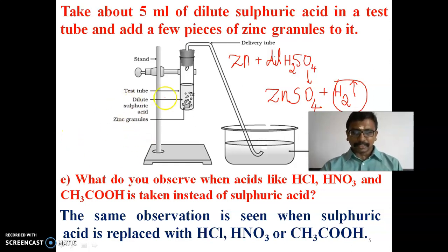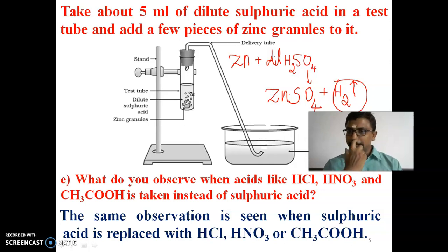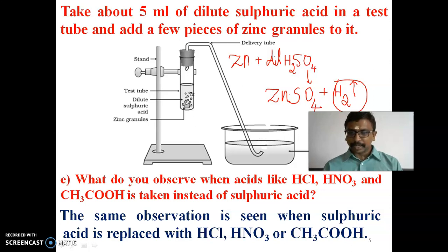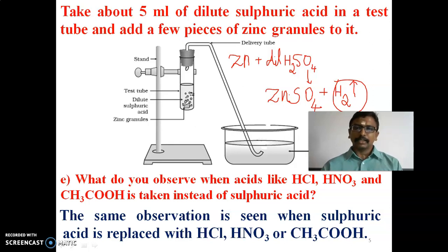When we take acetic acid — CH3COOH — with zinc, it forms zinc acetate — Zn(CH3COO)2 — plus hydrogen gas H2 is liberated. The same reaction will occur. So the general rule is: when an acid reacts in the presence of a metal, it forms salt plus hydrogen gas is liberated. Okay children, see you in the next session.